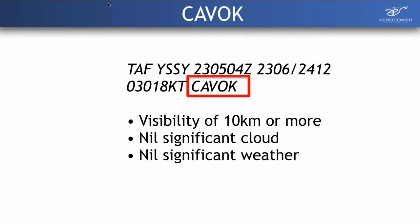CAVOK is another section you might see — it's an abbreviation covering a few different things. Very broadly, it means visibility is 10 km or greater, there's no significant cloud in the aerodrome area, and no significant weather such as rain, hail, or fog. So when we see CAVOK, it's a thumbs up that it's going to be good weather.